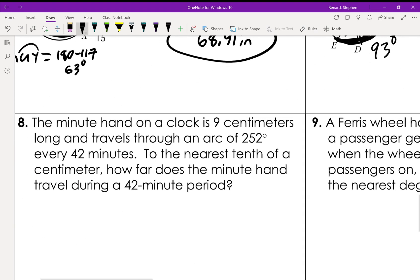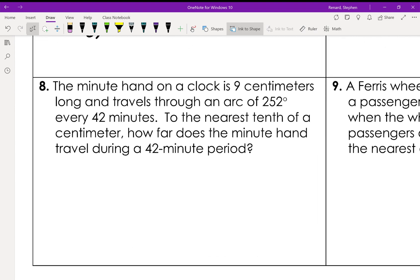Okay, our last two. Word problems. When will I ever need this? Here we go. The minute hand on the clock is 9 centimeters long and travels through an arc of 252 degrees every 42 minutes. How far does the minute hand travel during a 42-minute period? So this is what it's asking. We've got a clock right here. We've got a 9-centimeter long minute hand, and every 42 minutes it goes 252 degrees. How long does it travel? Well, we can do that.